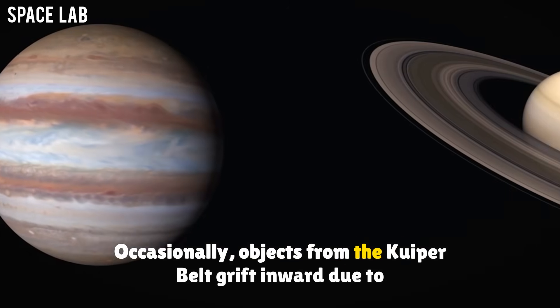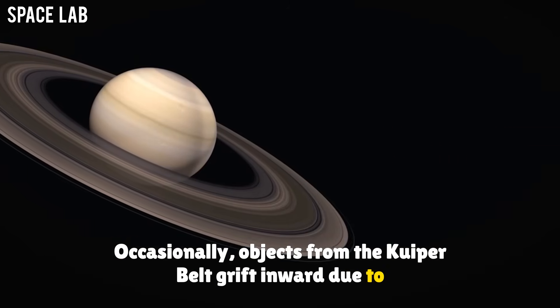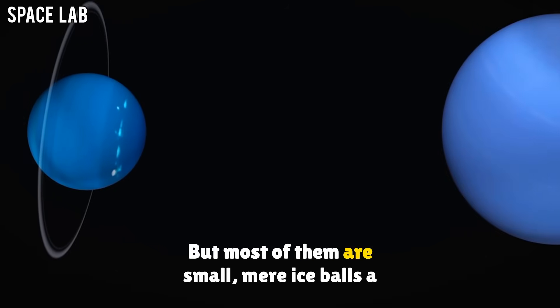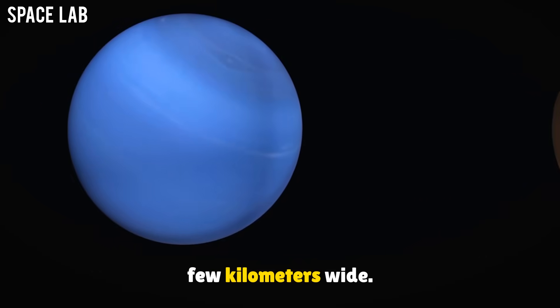Occasionally, objects from the Kuiper Belt drift inward due to gravitational nudges. But most of them are small, mere ice balls a few kilometers wide.